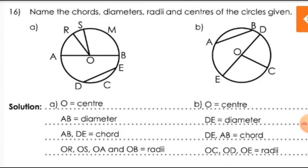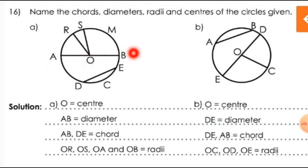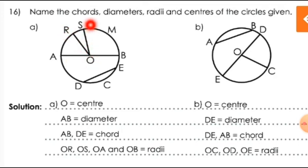Now which are the radii? The distance from the center to any point on the circle — so here OA, OB, OR, and OS are all the radii of the circle. Radius is the singular word; here there are four radii — R-A-D-I-I. So the radii are OA, OR, OS, and OB.